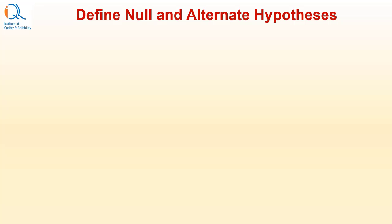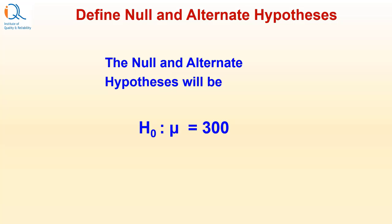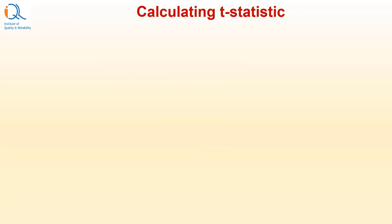So, we must first define null and alternate hypothesis. The null and alternate hypothesis will be H0: mu equals 300 and H1: mu not equal to 300. Now, we need to calculate the t-statistic.